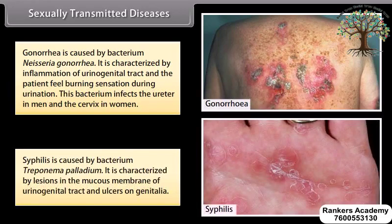Syphilis is caused by the bacterium Treponema pallidum. It is characterized by lesions in the mucous membrane of the urinogenital tract and ulcers on the genitalia.